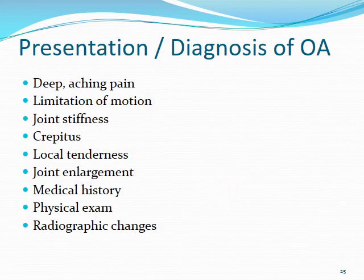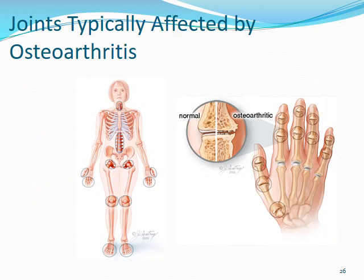With osteoarthritis, expect deep aching pain, limitation of motion, and joint stiffness — which typically goes away within about 30 minutes of use in the morning. Crepitus, local tenderness, joint enlargement, and potentially radiographic changes may be present. Larger joints — hips, knees, neck, and back — are predominantly affected, as opposed to the smaller joints of RA.